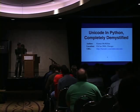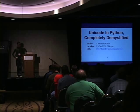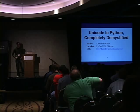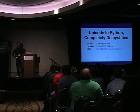We're going to get started with the last session before lunch. We're going to do Unicode in Python, completely demystified. It's presented by Kumar McMillan. Kumar McMillan lives in sunny Chicago, Illinois. He works as a senior software engineer at Blue Frog Online.